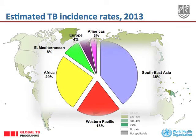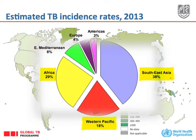This pie shows the distribution of cases. Southeast Asia has 38% of the world's cases and Western Pacific 18%, making Asia the continent with the highest number of TB cases. Africa is responsible for about 29% of the cases, with the rest in the Eastern Mediterranean region, Europe, and the Americas.